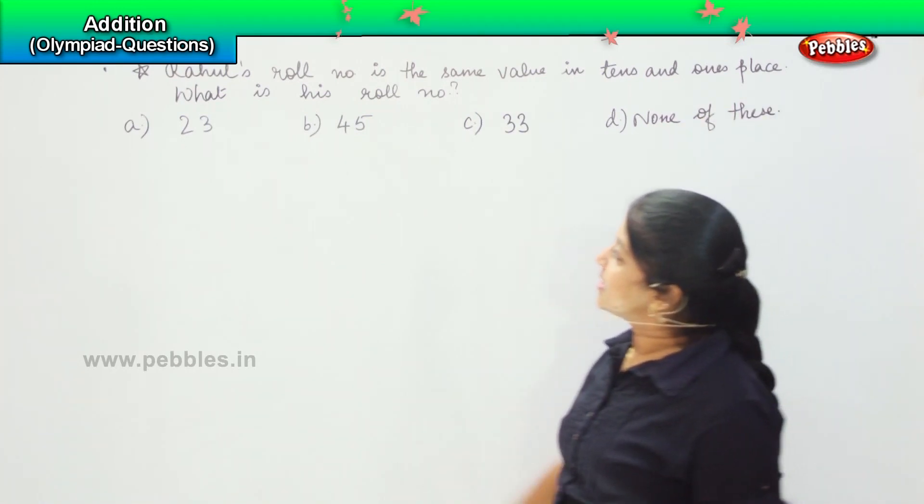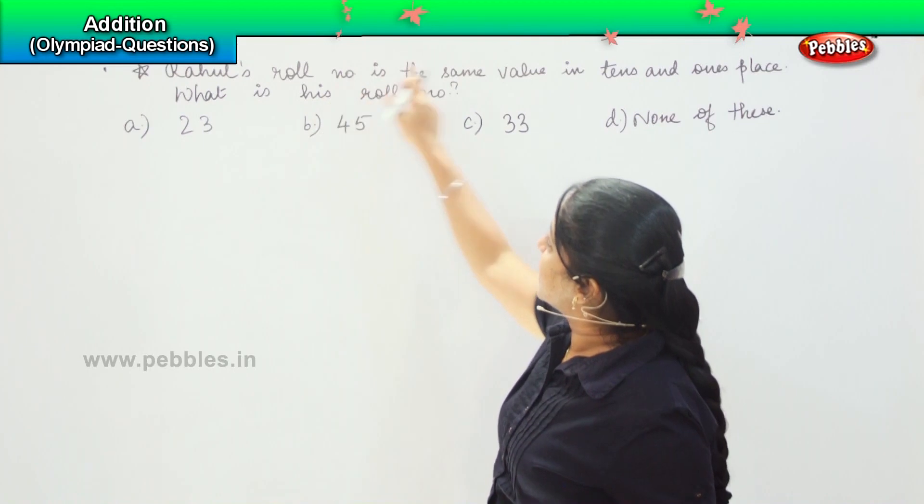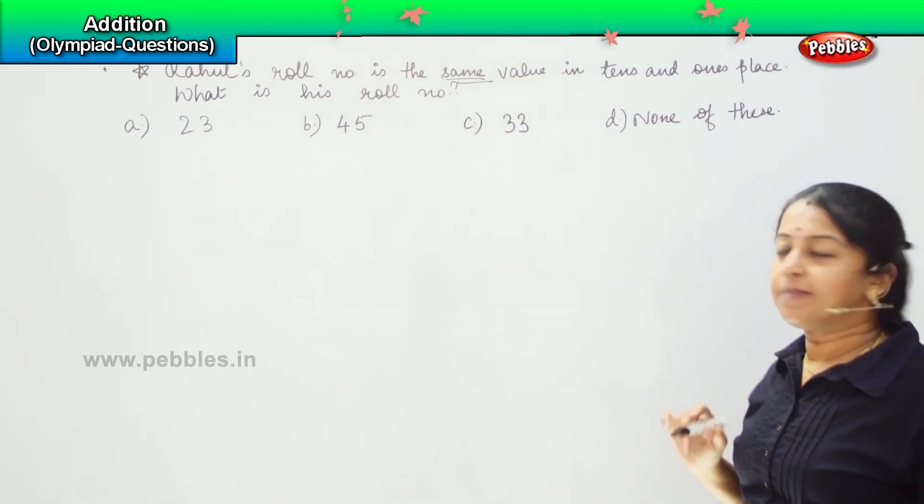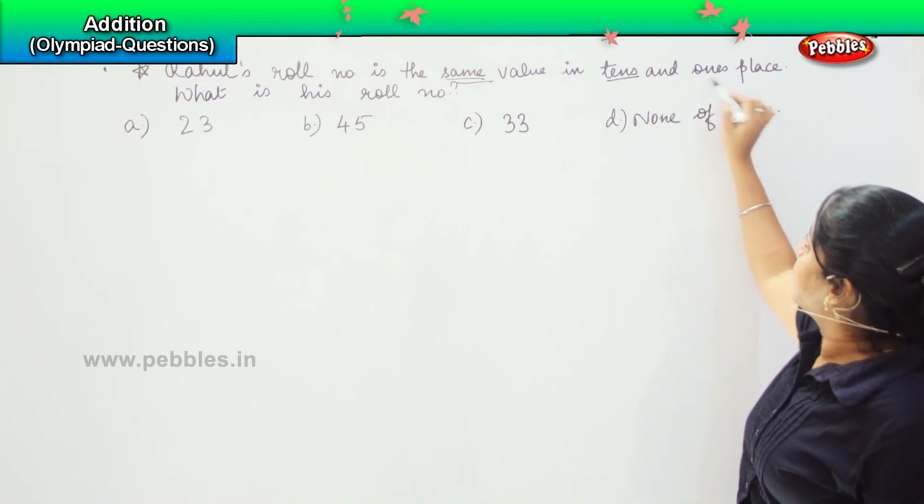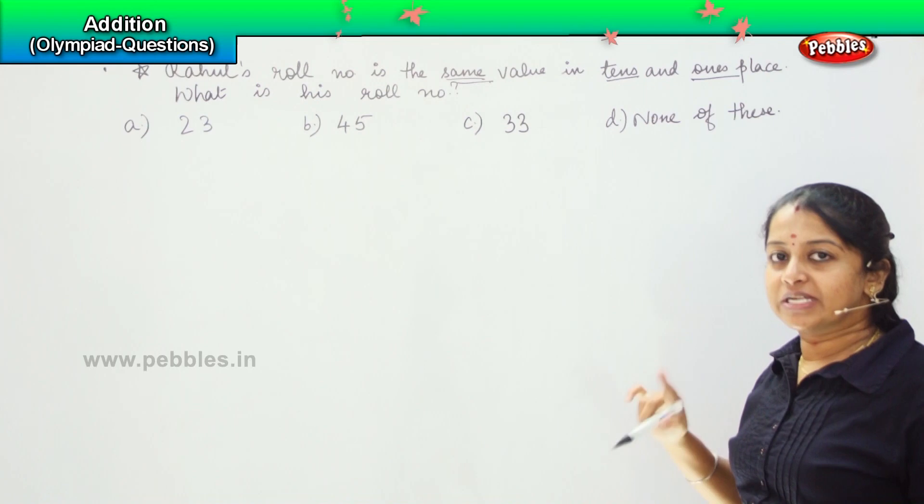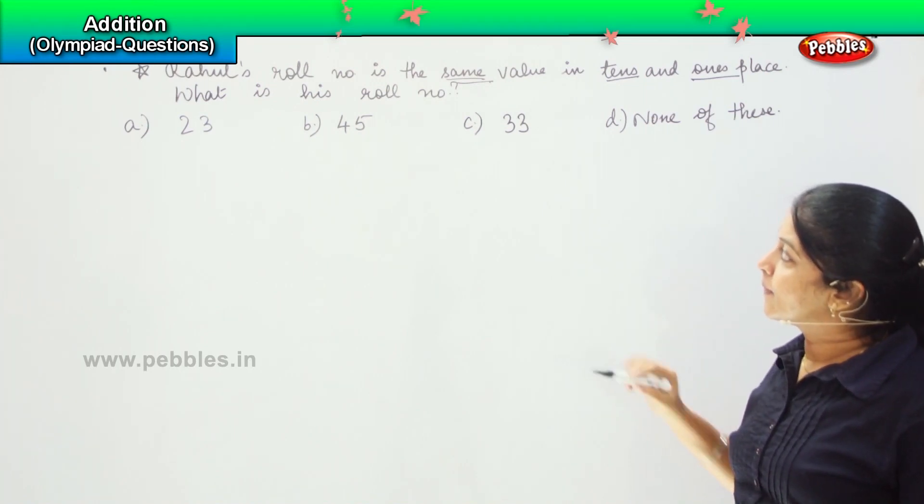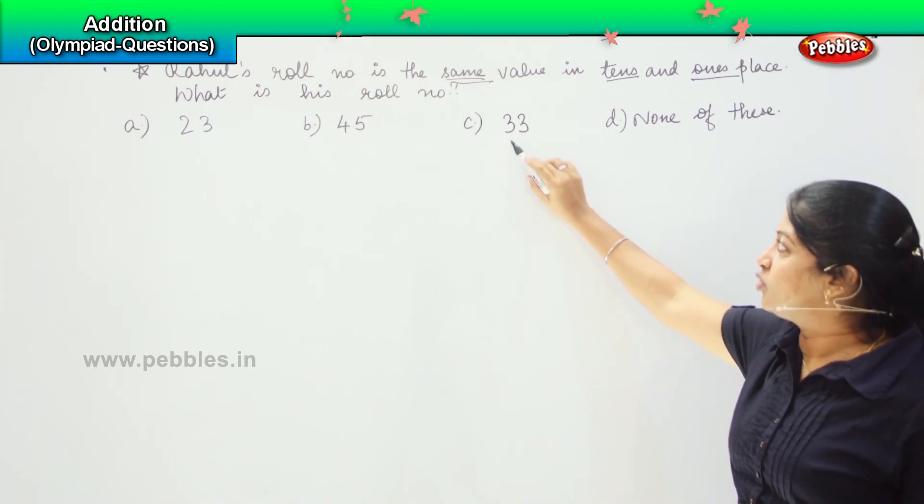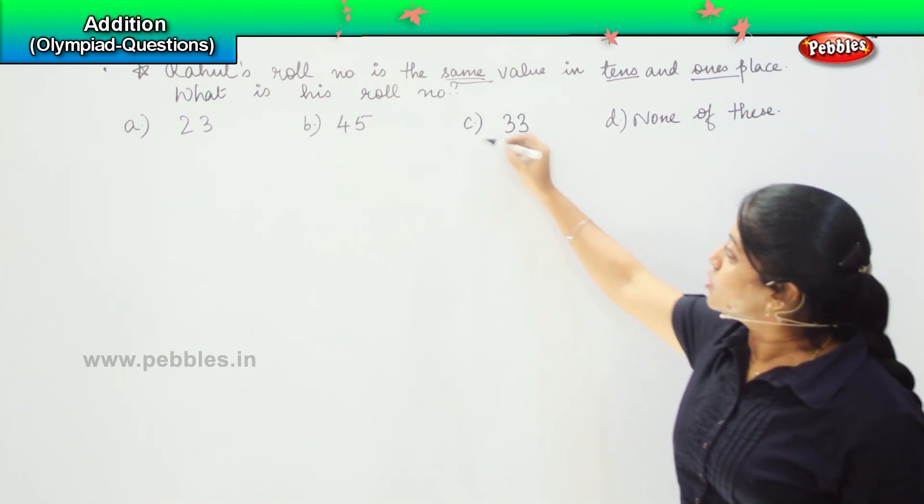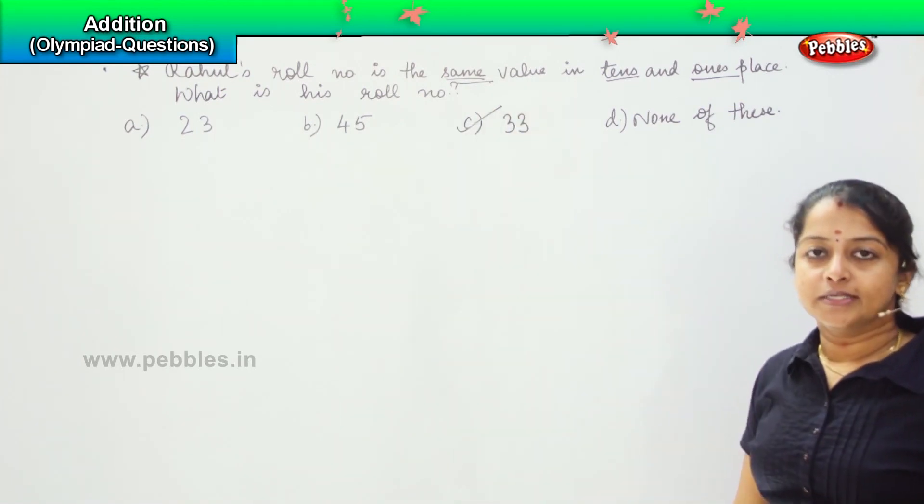What is the question saying? The question is saying that Rahul's roll number has the same value in the tens and in the ones place. So where can you find a number which is same in ones and tens place? It is 33. 3 and 3 - the same number is there in the tens and in the ones place. So my answer is 33.